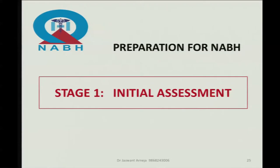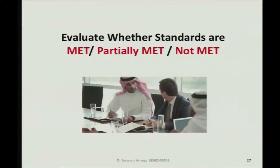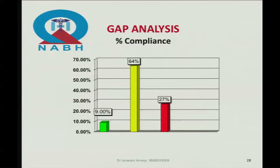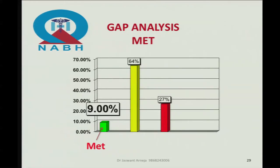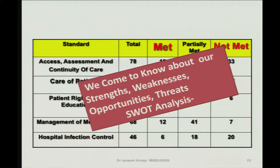How to prepare for NABH accreditation: the first step is initial assessment — identifying gaps in your center. Assess physical facility gaps, human resource gaps, regulatory requirement gaps, and biomedical equipment gaps. Evaluate whether your standards are met, partially met, or not met. A gap analysis will show how much you have met, partially met, and not met. Most of us will realize that 50–60% of NABH requirements are already in place. You will be surprised — we are all doing very good work; you just have to match with NABH standards. This process reveals your strengths, weaknesses, opportunities, and threats — called SWOT analysis.